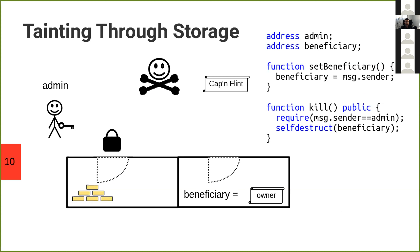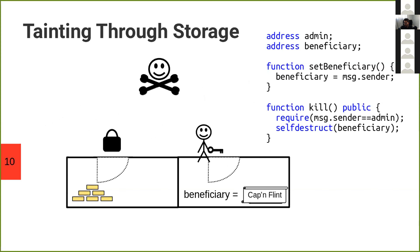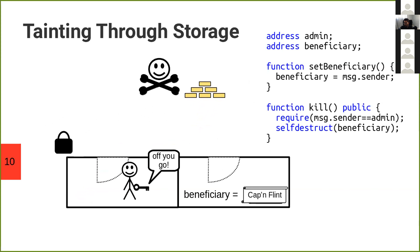In this analogy, we still have a key to a locked room, but it's securely held by the administrator, so we cannot just nab the key. However, there's another room which contains the name of the beneficiary — this room is unlocked. The attacker can set themselves as the beneficiary. When the administrator goes into this room to read that information, it takes that information with them into the locked room and then sends the gold to the pirate.